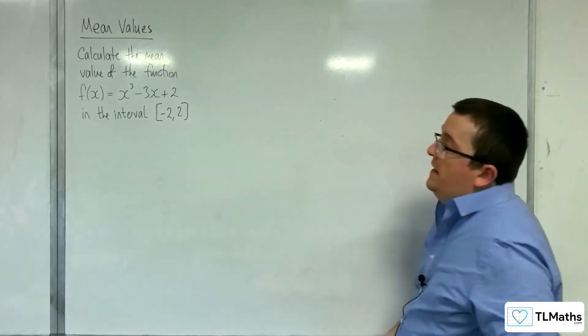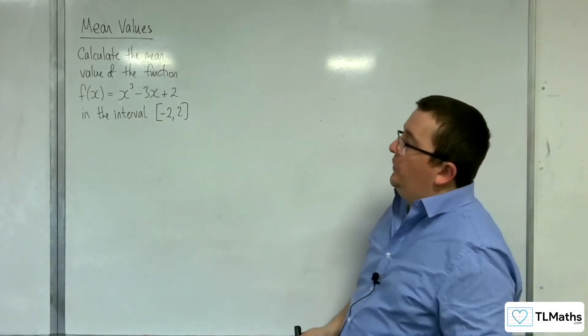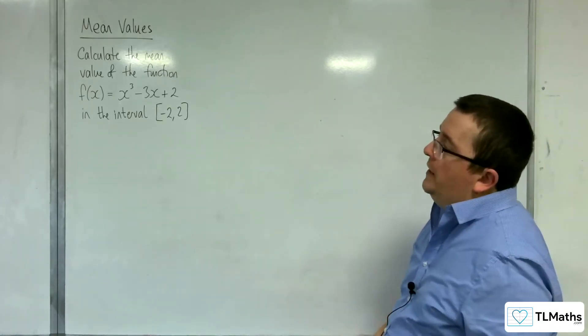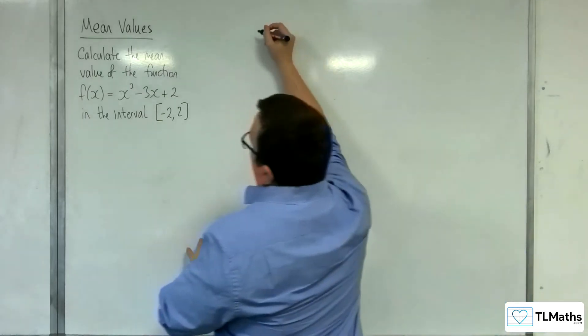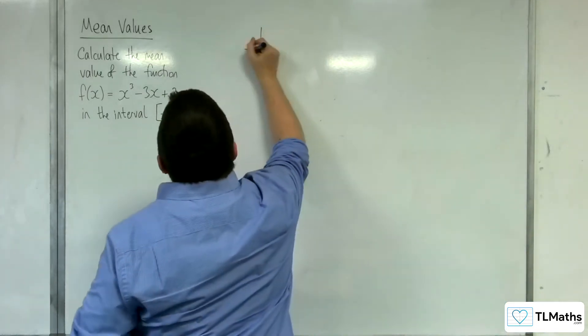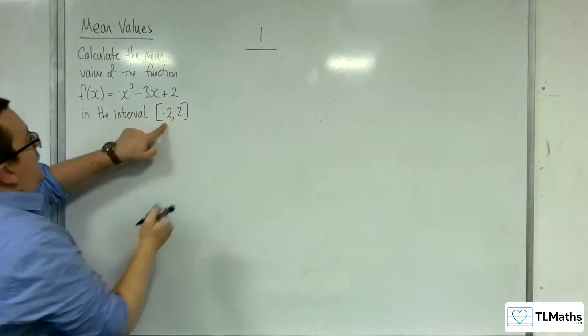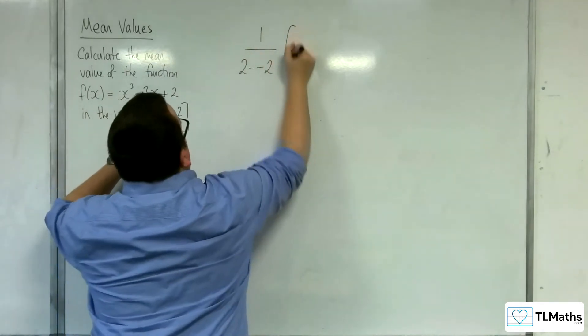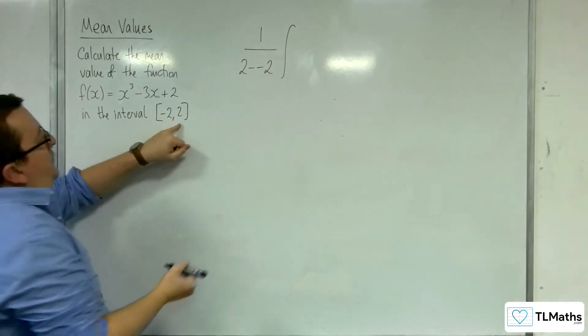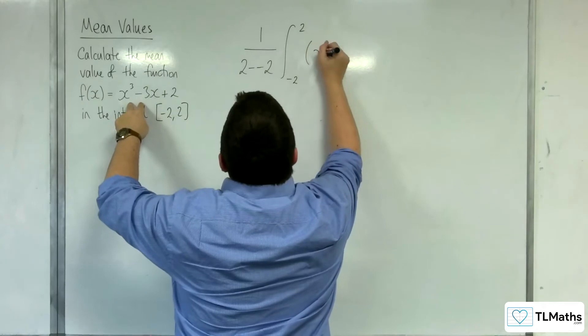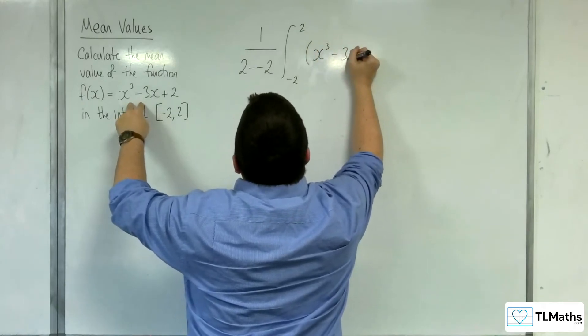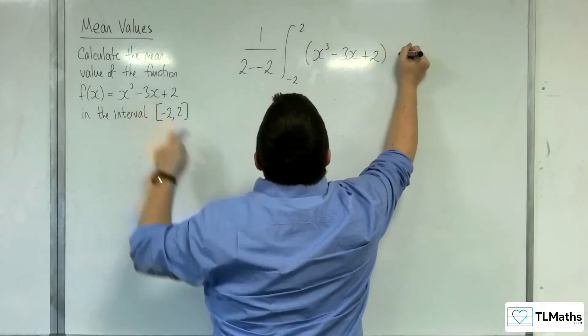In this video we're going to calculate the mean value of the function f(x) equals x cubed take away 3x plus 2 in the interval -2 to 2. So the mean value would be 1 over 2 take away -2 times the integral from -2 to 2 of x cubed take away 3x plus 2 dx.